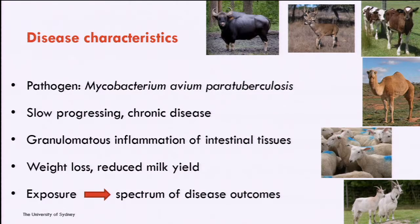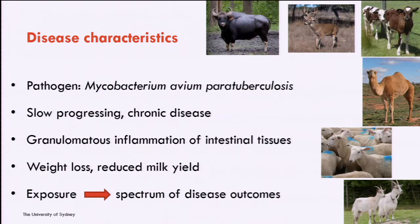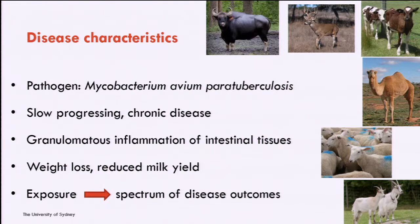For those of you who may not know this disease, paratuberculosis or Johne's disease is caused by Mycobacterium avium paratuberculosis. Like TB, it's a very slow-progressing chronic disease. The histopathology shows a granulomatous inflammation of intestinal tissues. You can see from these pictures that ruminants are the main host for this pathogen.